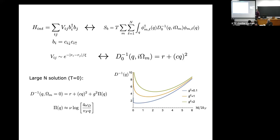If I solve Migdal-Eliashberg theory, the fully dressed bosonic propagator has this Ornstein-Zernike form plus a self-energy coming from the pair field susceptibility at the static piece. For small q, the logarithmic divergence of the pair susceptibility is cut off by omega_Debye over v_Fermi times q. Everything is positive, so the inverse propagator has a minimum at finite q — the minimum has moved away from q equals zero because of this logarithmic piece of the pair susceptibility. With repulsive interactions the q equals zero piece gets weaker and weaker rather than growing, but the peak is at finite q. That's encouraging — it would condense if we could push it down.